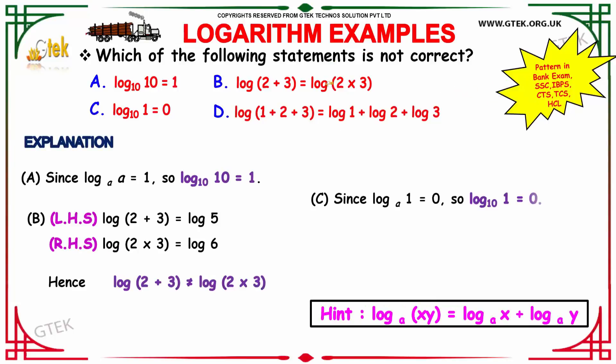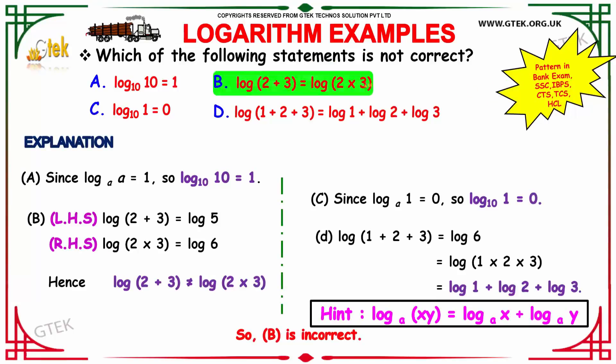We have to find the statement which is not correct among these four. First option: log 10 to the base 10 equals 1. Second option: log(2 + 3) equals log(2 × 3). Third option: log 1 to the base 10 equals 0. Fourth option: log(1 + 2 + 3) equals log 1 plus log 2 plus log 3.